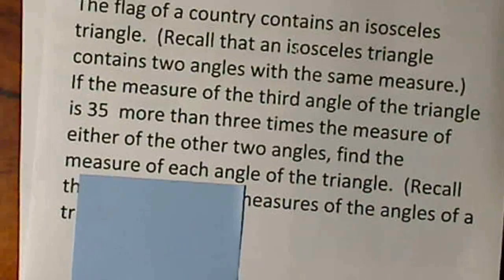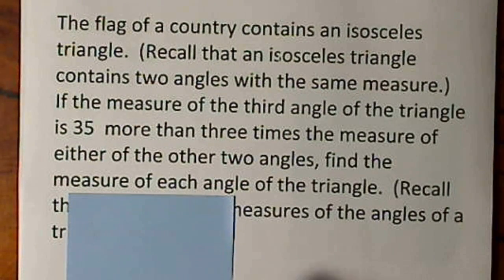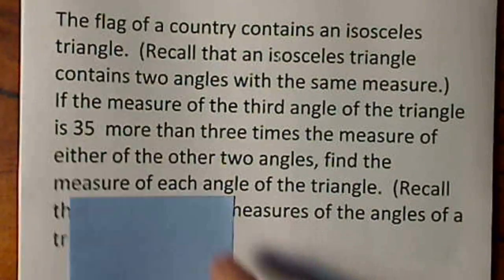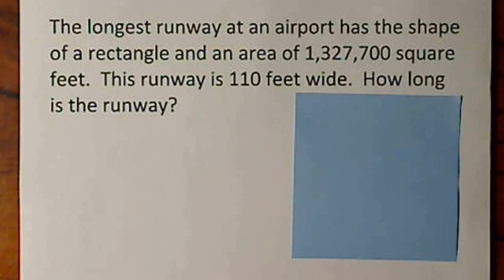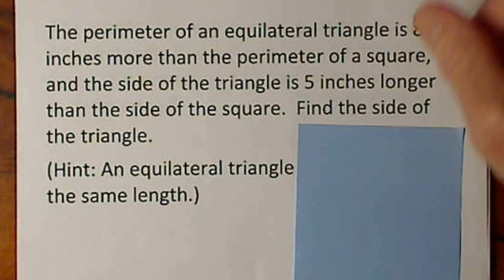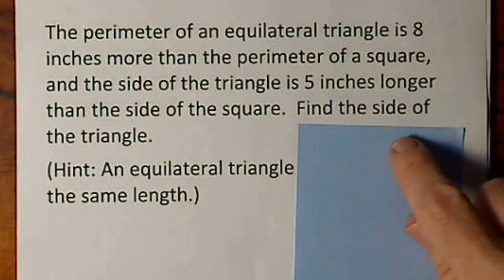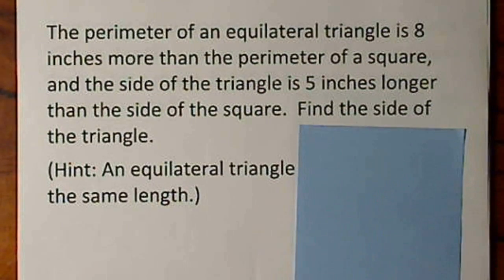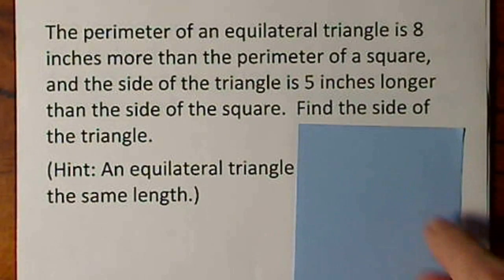First, we're going to find out how long the length of a runway or the length of a rectangle. Then we're going to look at a triangle and find the measure of each angle. And then finally, we'll be comparing a triangle to a square and trying to find the side of the triangle. This is the most challenging of the three, I would say.